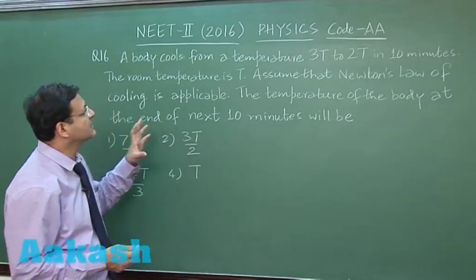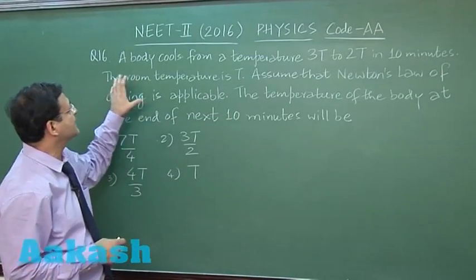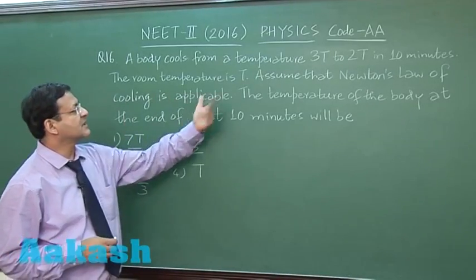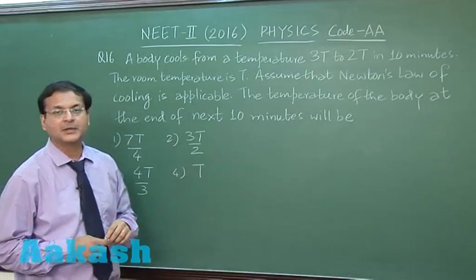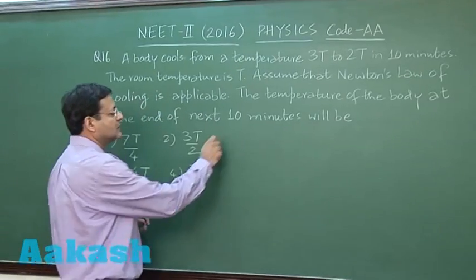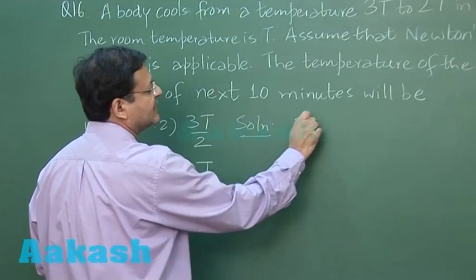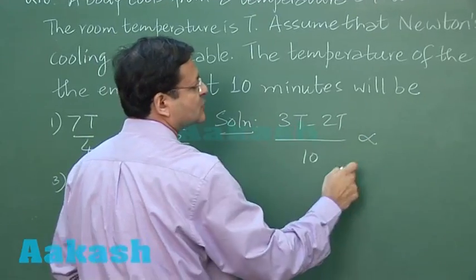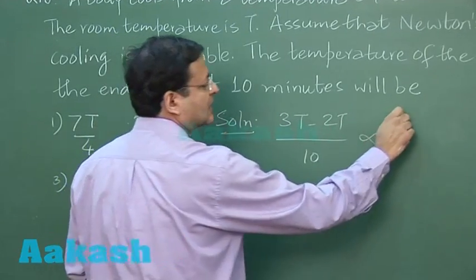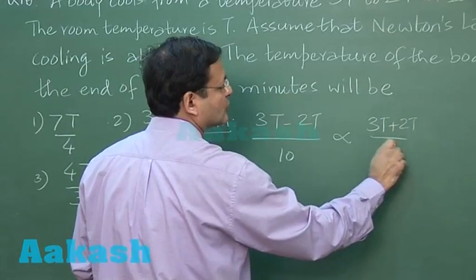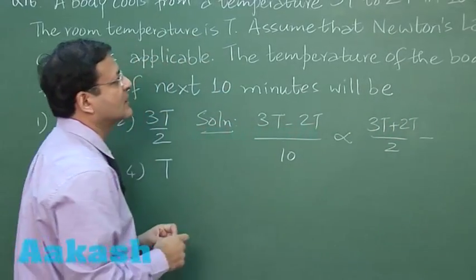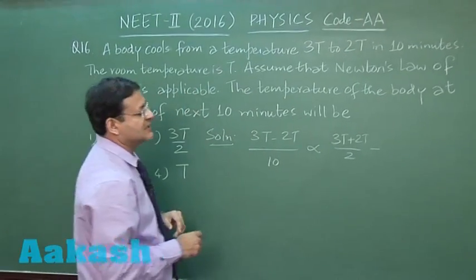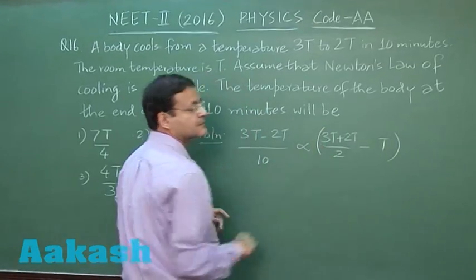Now this question 16 is based on Newton's law of cooling. It says that a body cools from a temperature 3T to 2T in 10 minutes. The room temperature is T. Assume that Newton's law of cooling is applicable. So it is coming from 3T to 2T in 10 minutes, and this is proportional to average of these two, 3T plus 2T divided by 2, minus the temperature of the surroundings. The room temperature is T. This is the way first equation will be written.